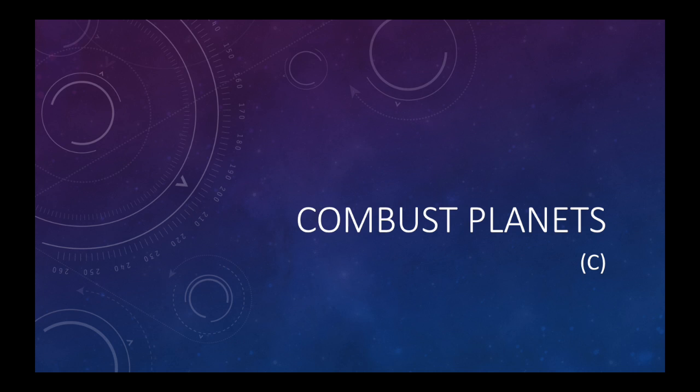For example, if Sun is in the 15 degree of Aries, then if a planet is around 20 degree of Aries or around 10 degree of Aries, 8 degree of Aries, or 23 degree of Aries, that's when that planet is considered to be combust.